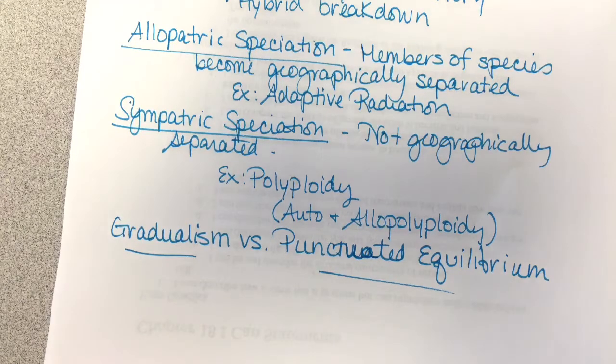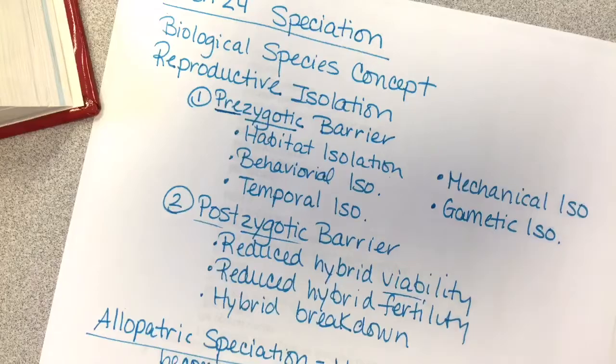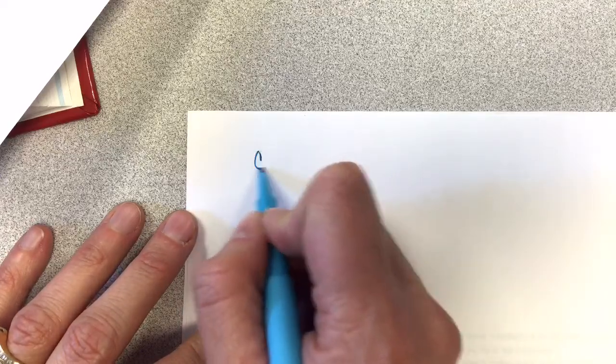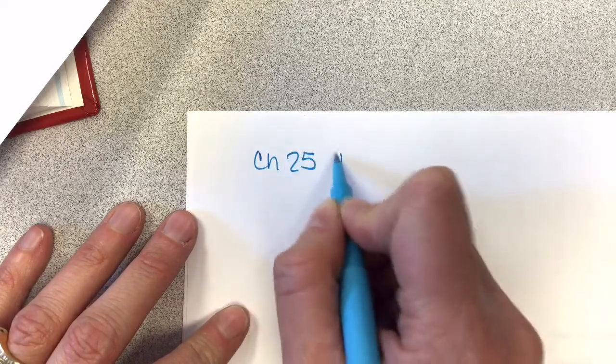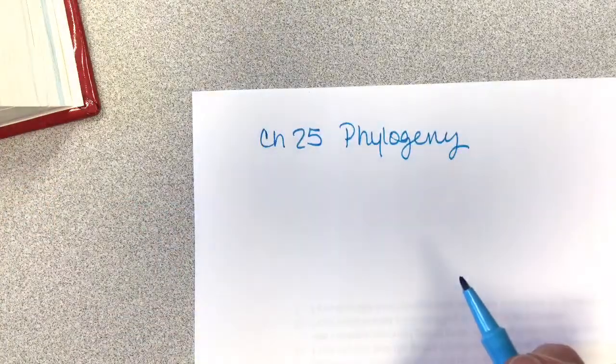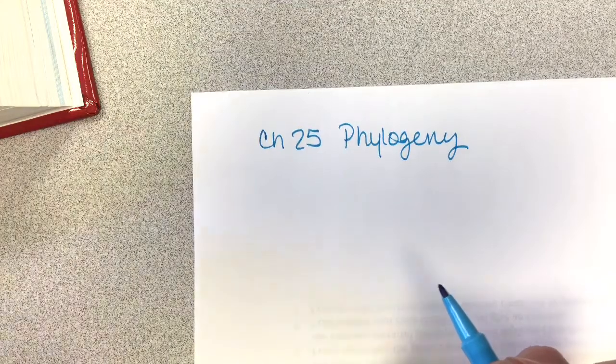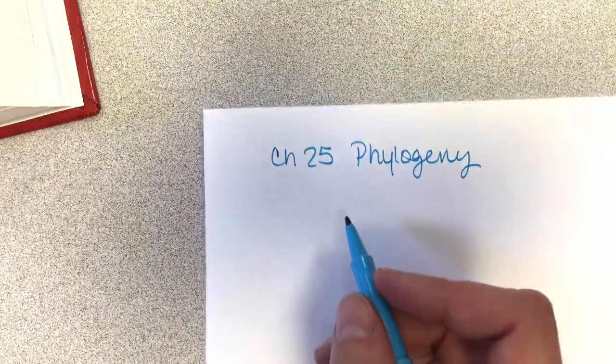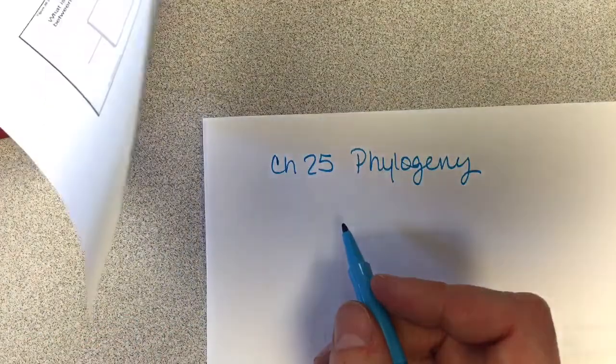So then we're going to look at Chapter 25. It's all about phylogeny — classifying organisms and making trees to show evolutionary relationships. The first thing we talked about here is taxonomy: how we organize living things.